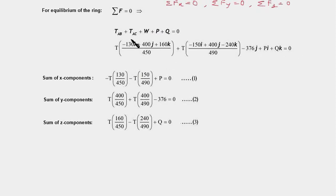So in this term, the i component is T times minus 130 upon 450. Similarly, here the i component from this term is minus T multiplied by 150 divided by 490 plus P, and this will be equal to zero. This is equivalent to saying that ΣFx equal to zero. And likewise, we sum all the y components. That is, now pick the j components from each of the terms.